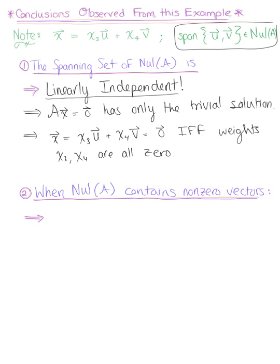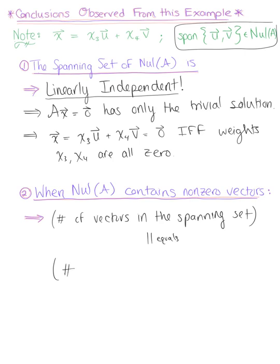The second conclusion we can observe is that when the null of A contains non-zero vectors, the number of vectors in the spanning set equals the number of free variables, which is pretty easy to see in this example.